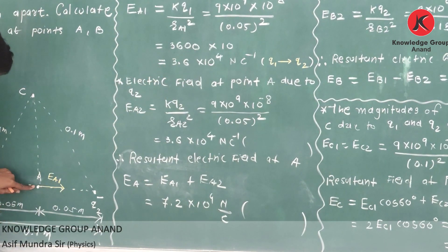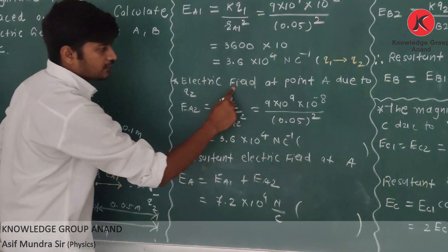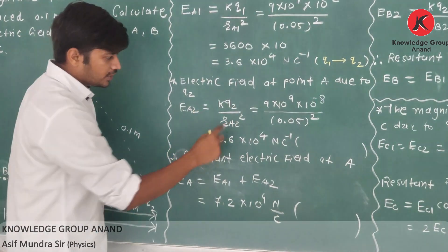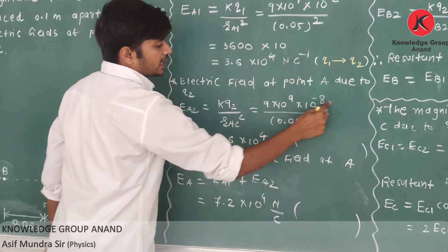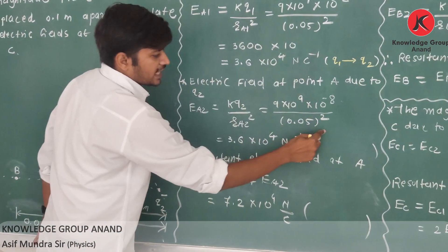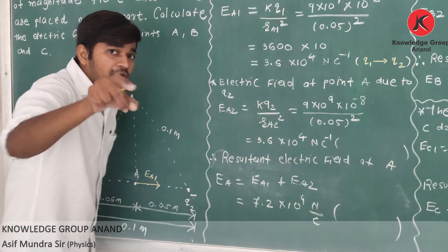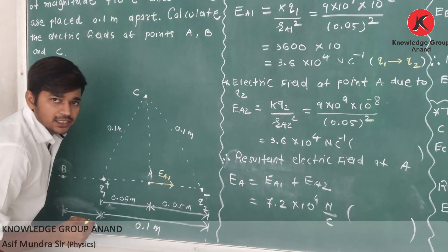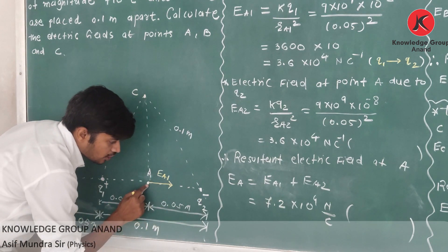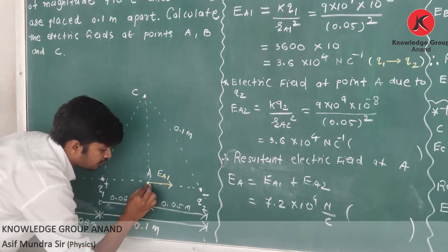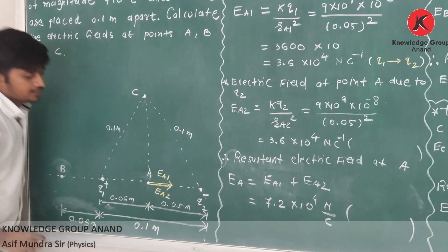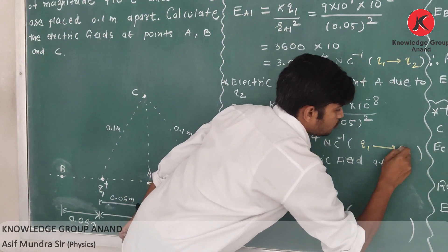Now, electric field at point A due to q2, which is a negative charge. eA2 = k·q2 / rA2 squared. k is 9 into 10 raised to 9, q2 magnitude is 10 raised to minus 8, distance between A and q2 is 0.05. Calculation is the same: 3.6 into 10 raised to 4 newtons per coulomb. What is the direction? Due to negative charge, electric field is radially inward — towards q2. So direction of eA2 is also from q1 to q2.